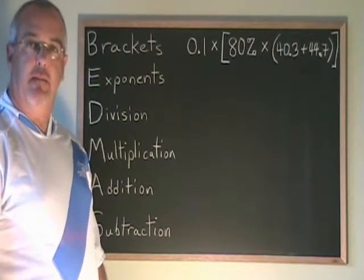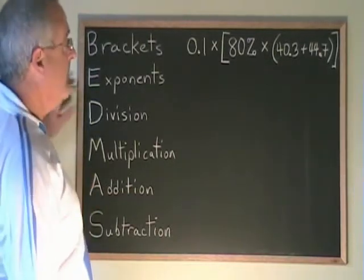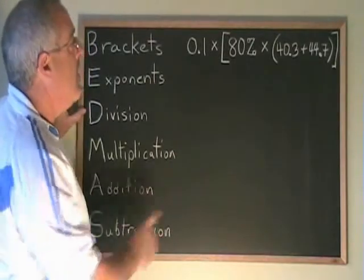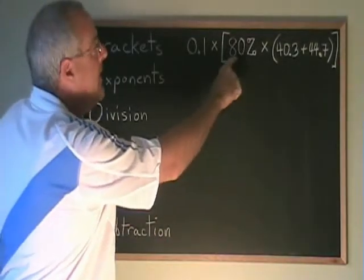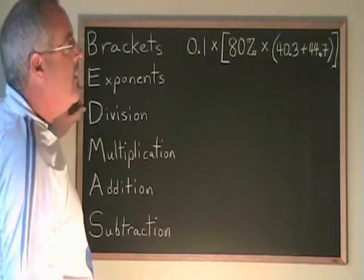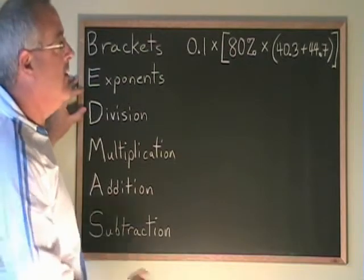Let's look at another example of the order of operations using decimals and percents. Here we have 0.1 times open square bracket, 80% times open round bracket, 40.3 plus 44.7, close the round bracket, close the square bracket. We have nested brackets.